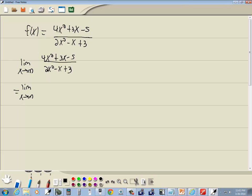And how we solve these is we divide everything by the largest power from your denominator. Our largest power downstairs is the x squared, so we'll divide everything by x squared. So we've got 4x squared over x squared plus 3x over x squared minus 5 over x squared all over 2x squared over x squared minus x over x squared plus 3 over x squared.